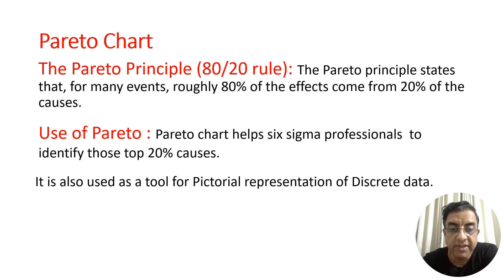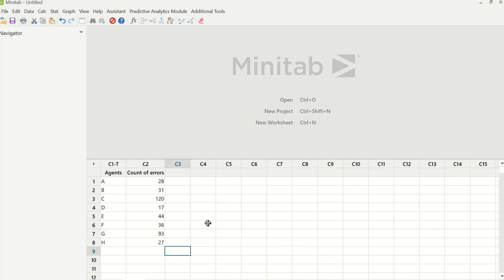Some of the tools that we are going to learn, like box plot and basic statistics, we are going to learn directly in Minitab. The first tool we are going to learn is Pareto chart. In column C1T, I have data for agents — the names of the agents are written there and the count of errors. So we have to identify which are the top 75% contributors. Let's create a Pareto chart and identify the top 75% contributors.